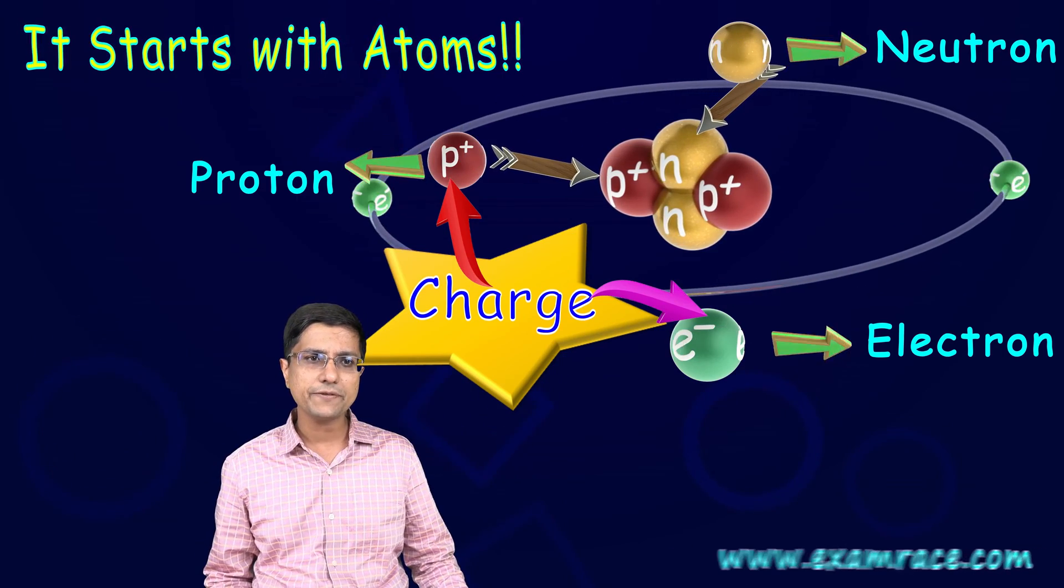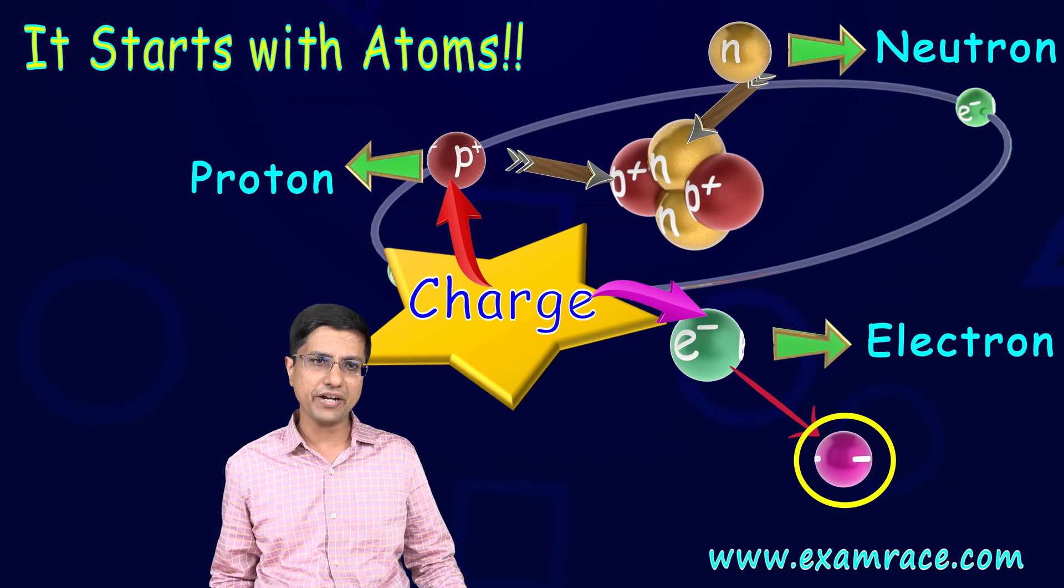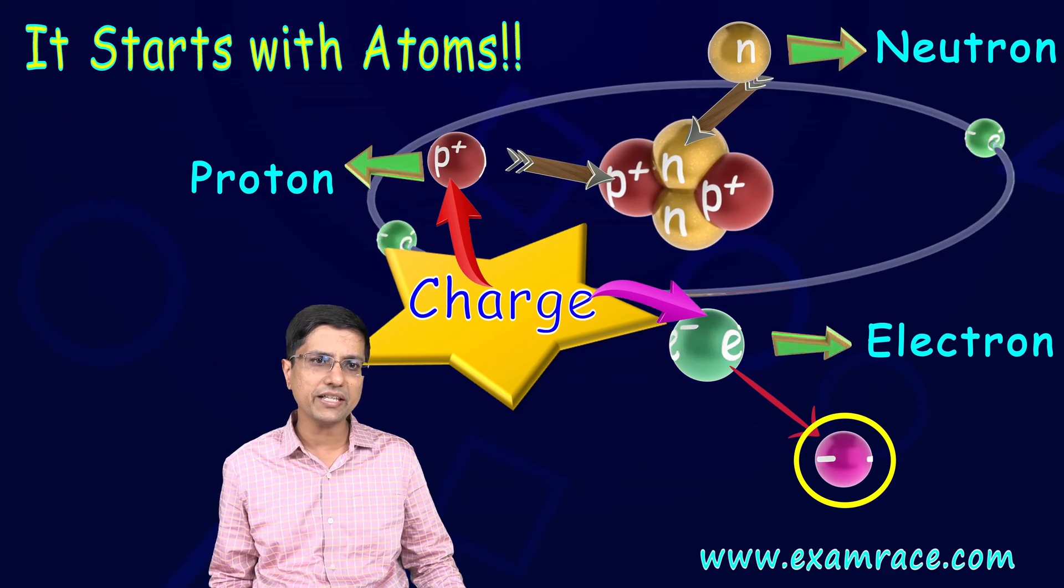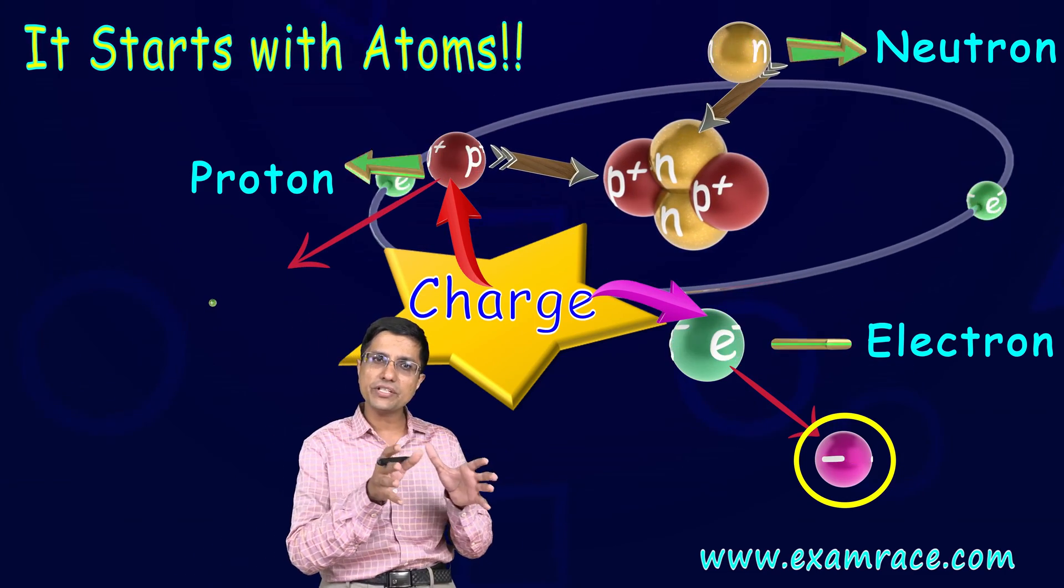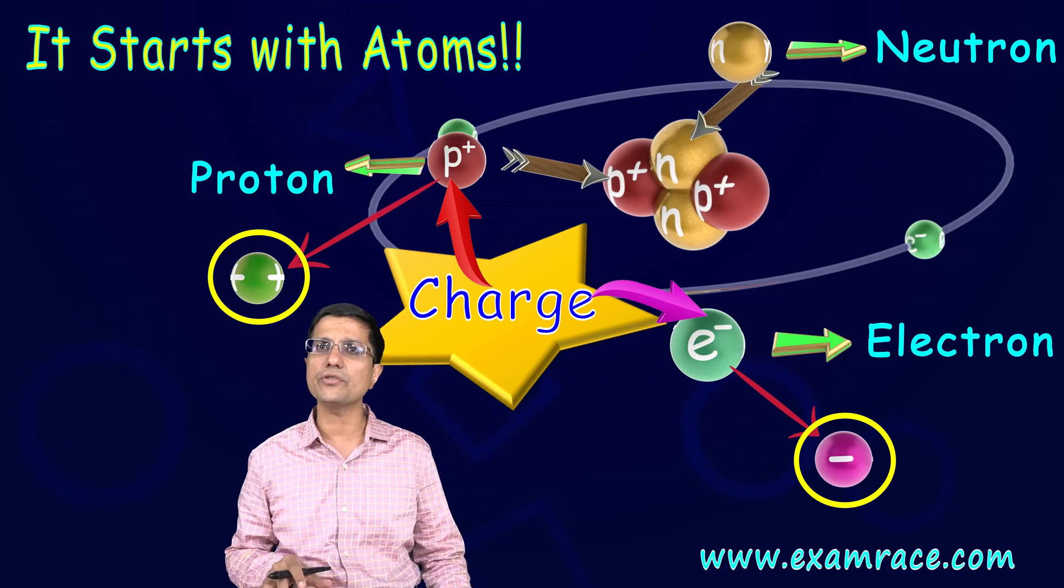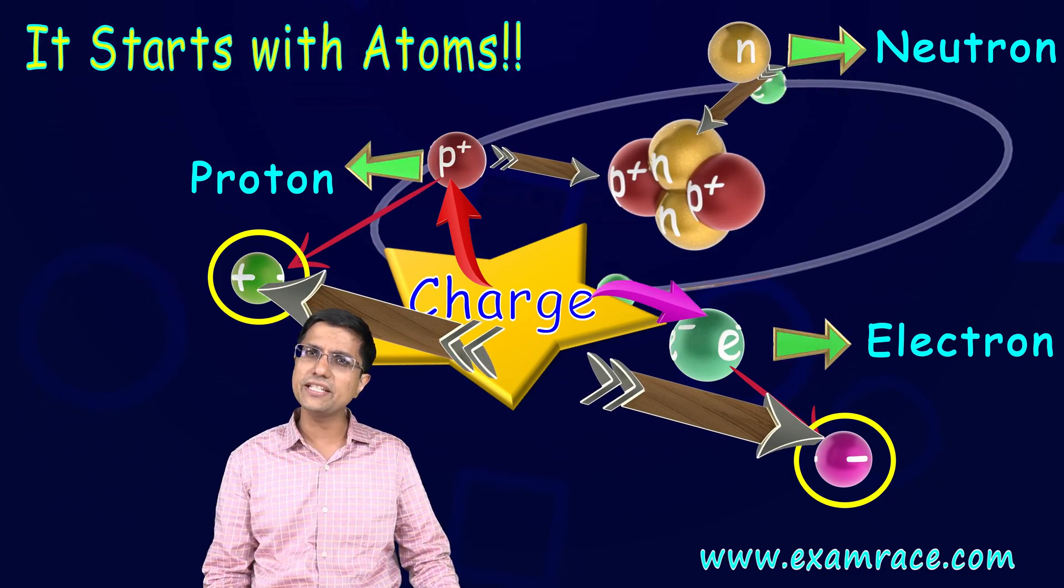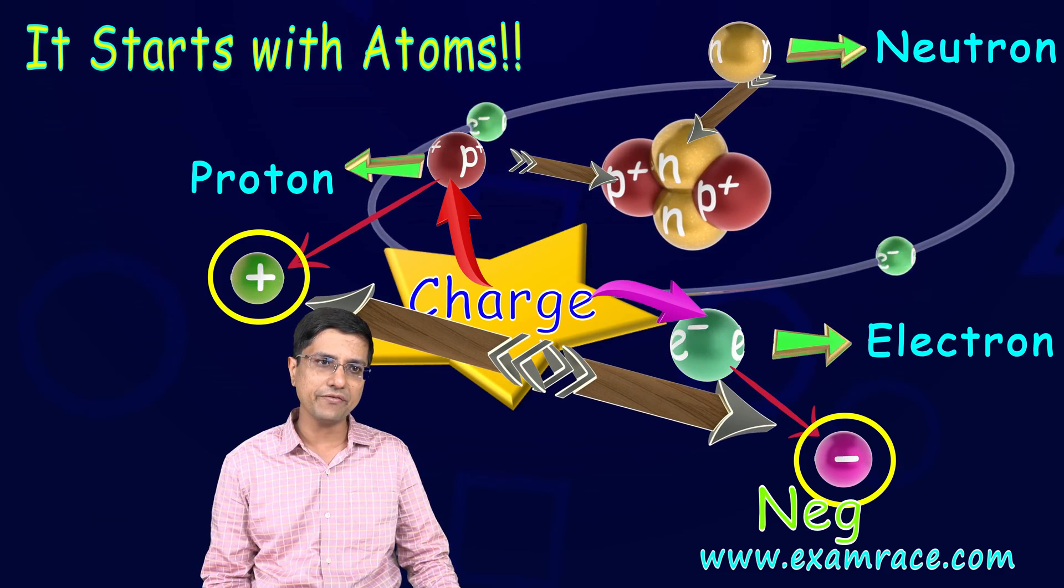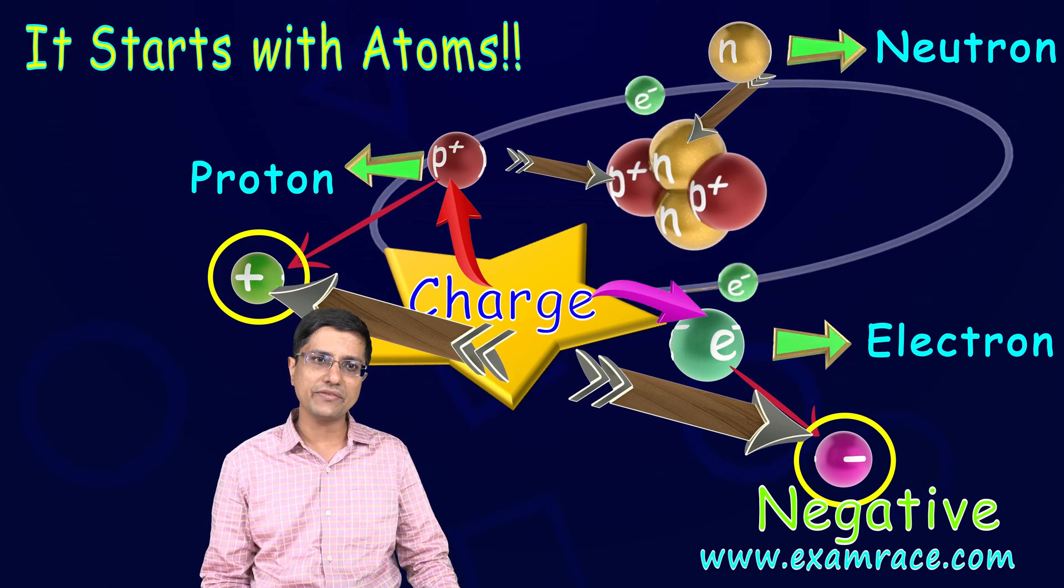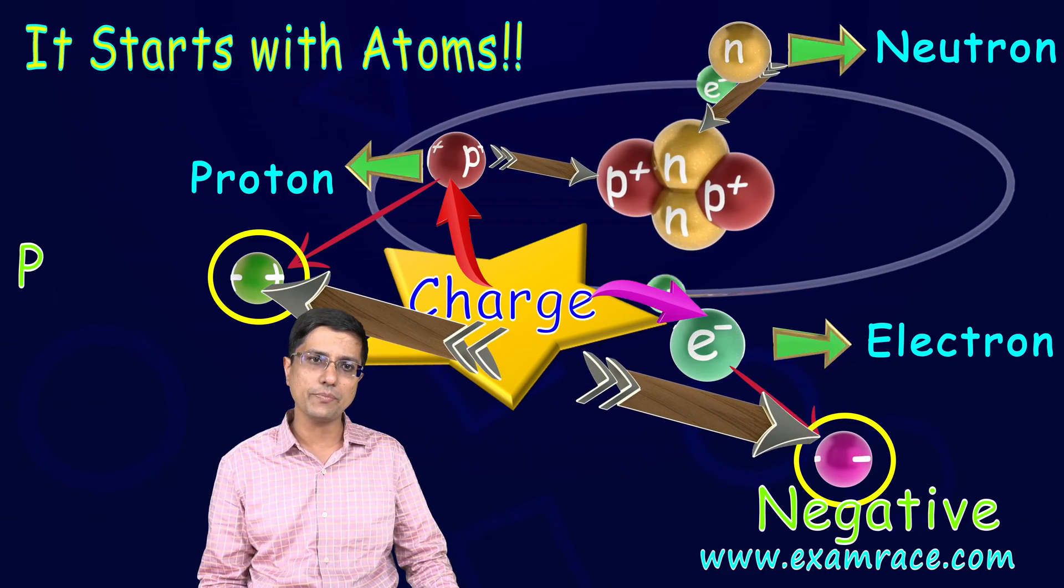Another thing to note is the charge on this electron is really different. Scientists did some experimentation and they understood that the charge of this electron was different than the charge of protons. To keep things simple, they just named the charge on the electron as negative and the charge that was there on the proton is positive.